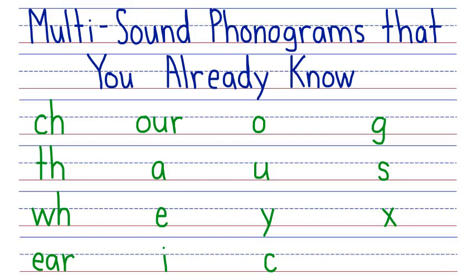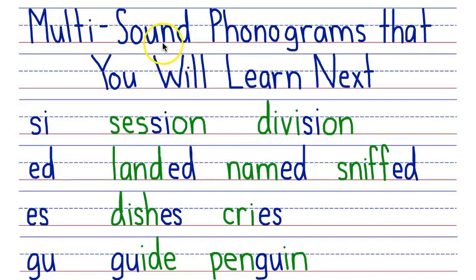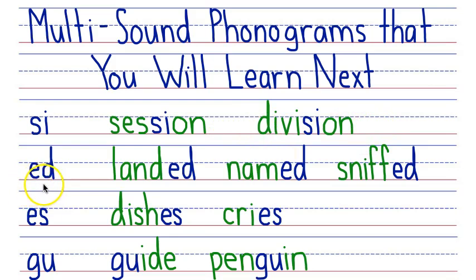In the next set of lessons, we're going to learn 17 more. Let's take a look at them. The first one is SI. This phonogram makes two sounds: SH and Z. You will learn the ED phonogram. This makes three sounds: ED, D, and T.